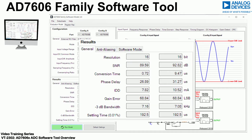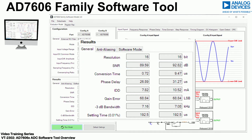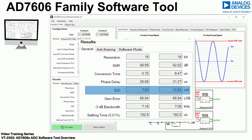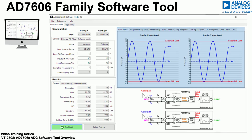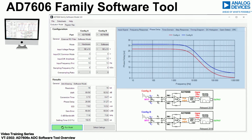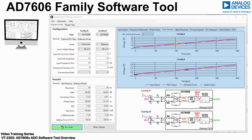Results include SNR (signal to noise ratio), 3 dB input bandwidth, phase delay, conversion time, settling time, as well as the supply current. A number of plots are also presented in the tool that allow further analysis of the selected ADC performance, which includes a frequency response, phase delay through the AD7606 complete DAS solution, as well as key information on the timing.